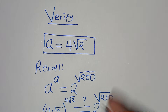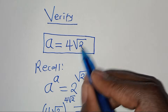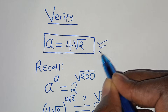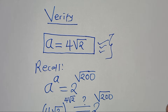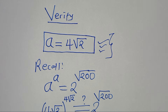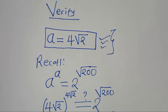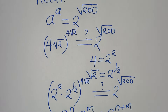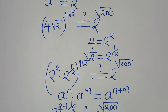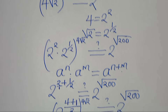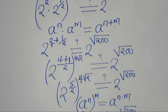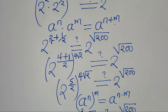The value of a, which is equal to 4 multiplied by square root of 2, actually satisfies the equation. Kindly like this video and subscribe. See you in the next video, bye bye for now.